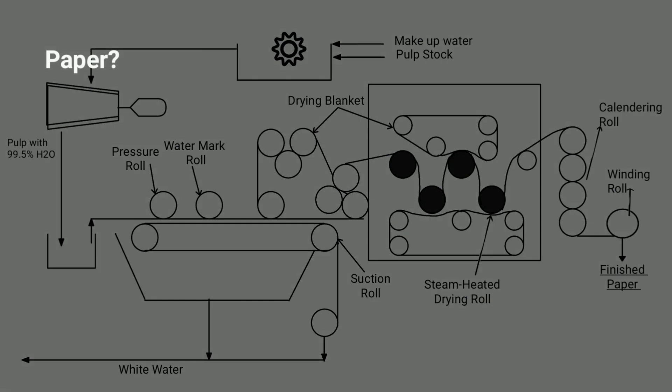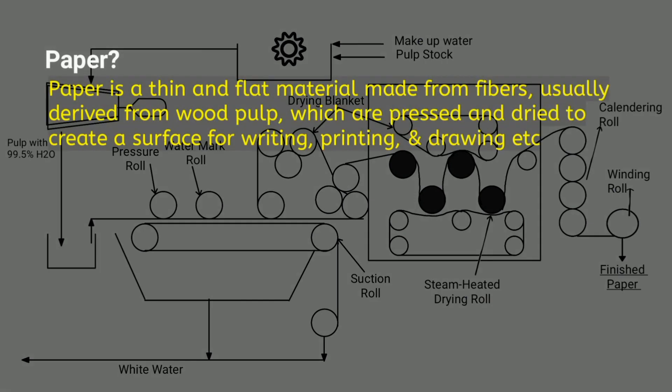First of all we will know what is paper. Paper is a thin and flat material made from fibers, usually derived from wood pulp, which are pressed and dried to create a surface for writing, printing and drawing.